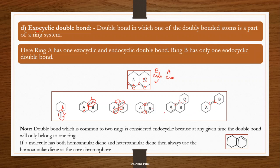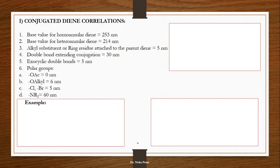That is how you should understand the difference between endocyclic and exocyclic double bonds. If a double bond is common to two rings, at any point the double bond belongs to only one ring. If the molecule has both homoannular and heteroannular diene possibilities, you must always use the homoannular diene as the core chromophore, because the base value is higher for homoannular.